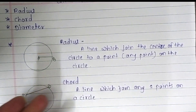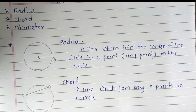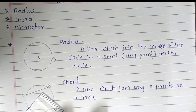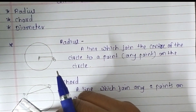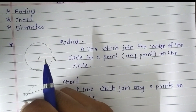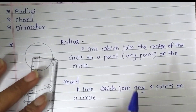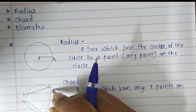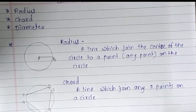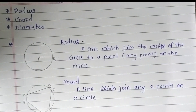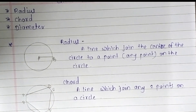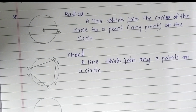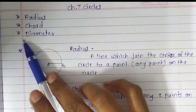A circle has many chords. We can draw them like this and also give names to the points. We can draw a chord like this and give them a name. Remember, a circle has many chords.